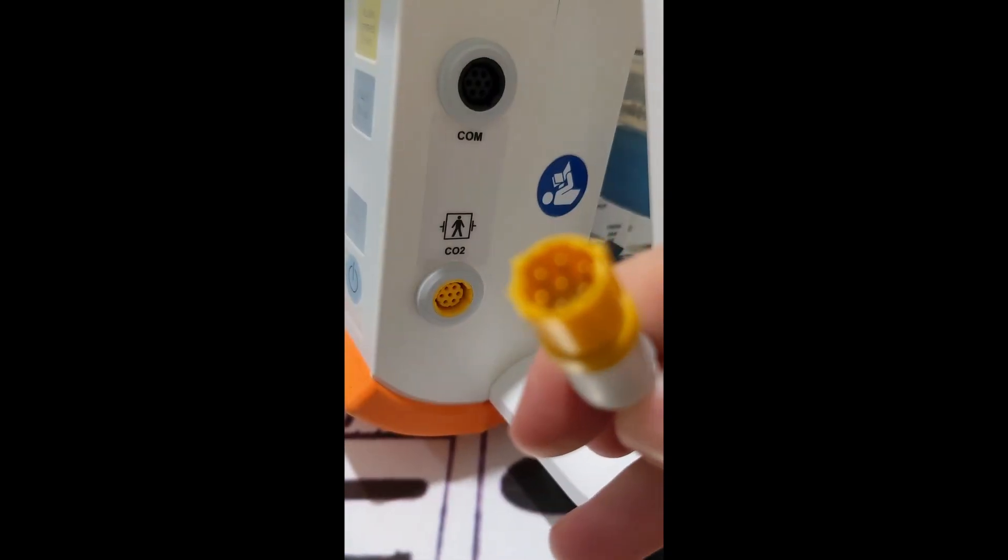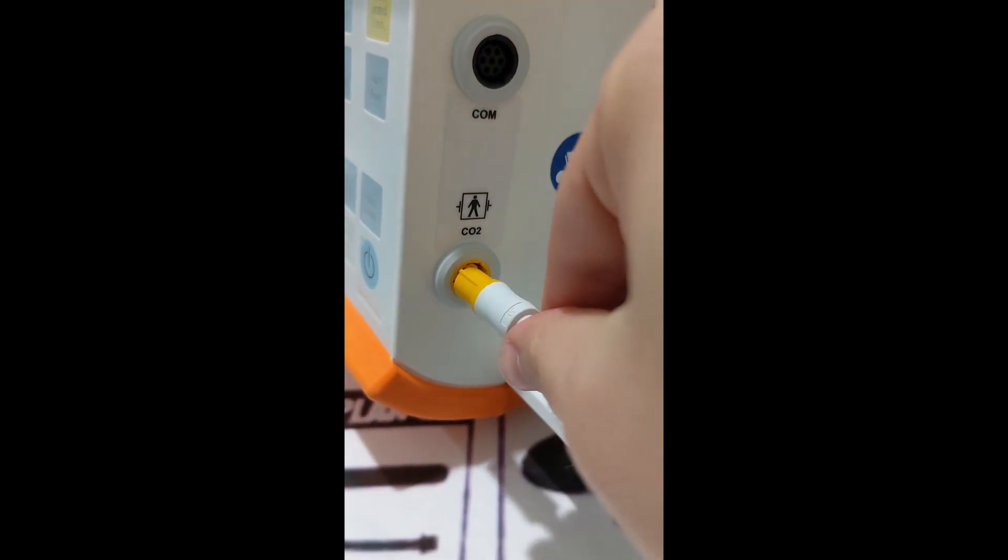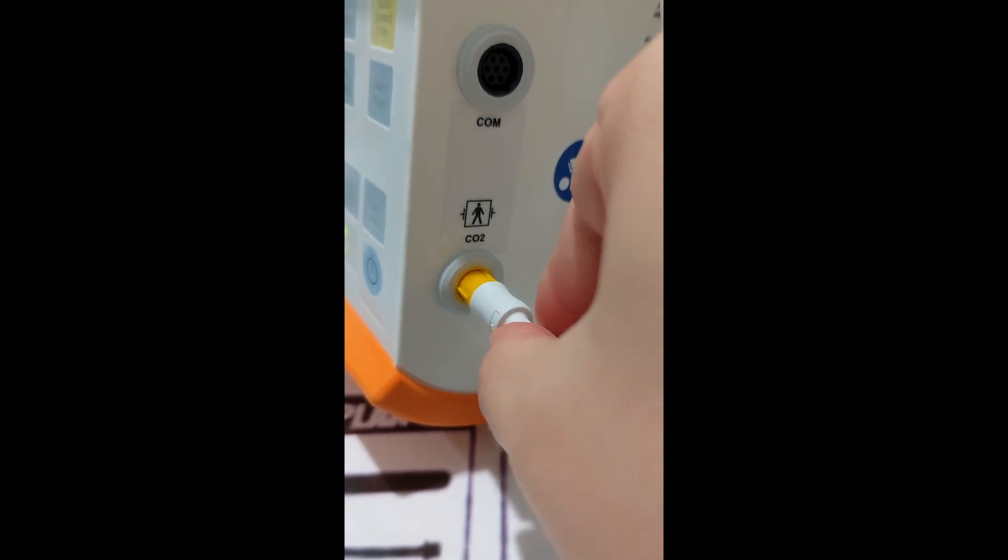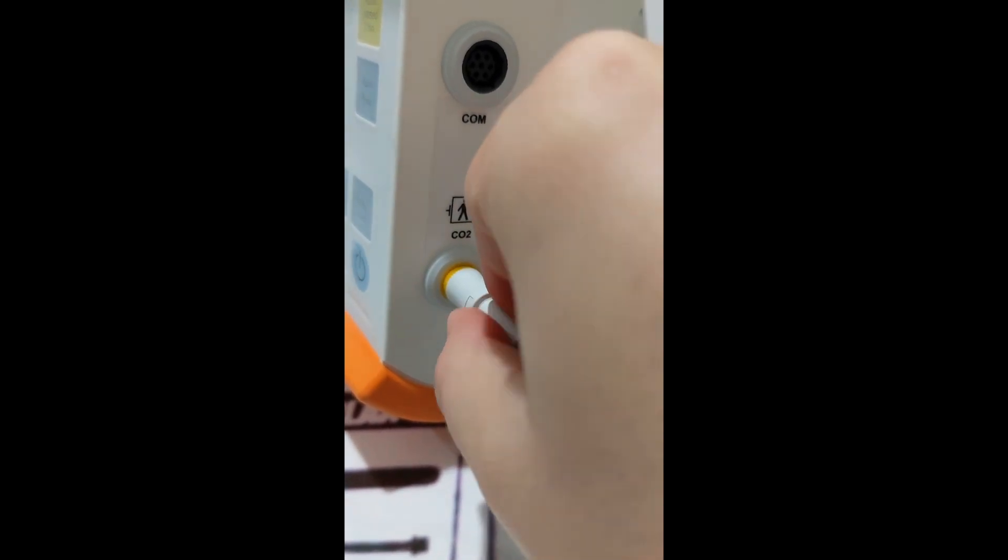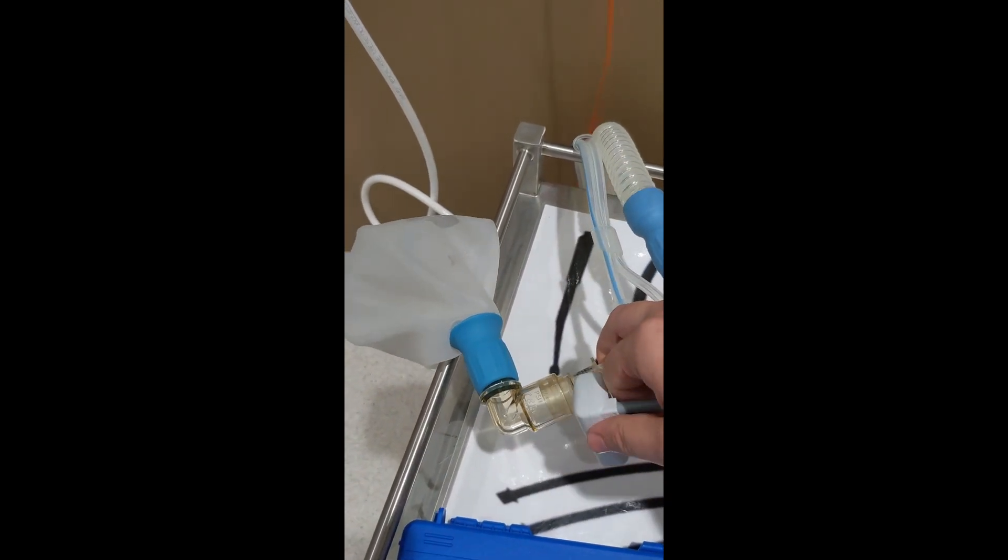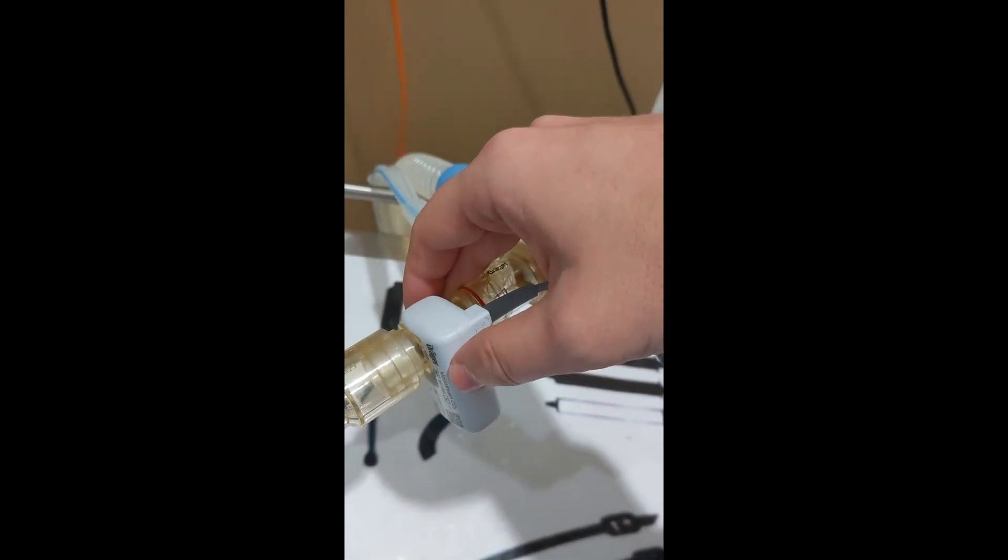Attach the Entitle CO2 monitoring to the side of the OXYLOG machine. The Entitle CO2 connector only fits one way. We then connect the monitoring to the cuvette which has been placed in the circuit and make sure it's secure.